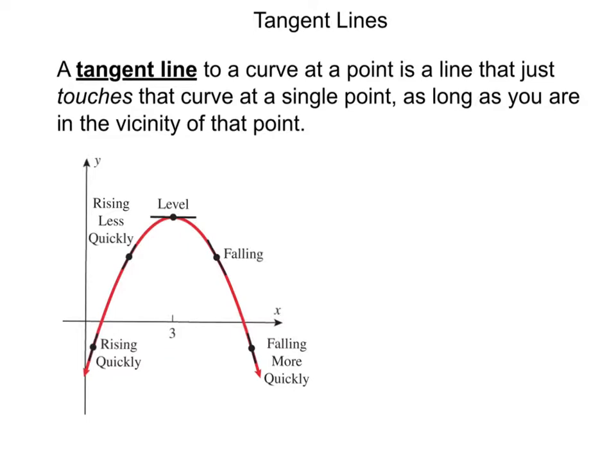Let's start out by taking a look at a tangent line. A tangent line to a curve at a point is a line that just touches the curve at a single point, as long as you are in the vicinity of that point. Now when we talk about a curve, it's important to remember that when we deal with slope, you've always associated slope with lines because lines have a constant slope. Curves have slope as well — it does make sense to talk about the slope of a curve.